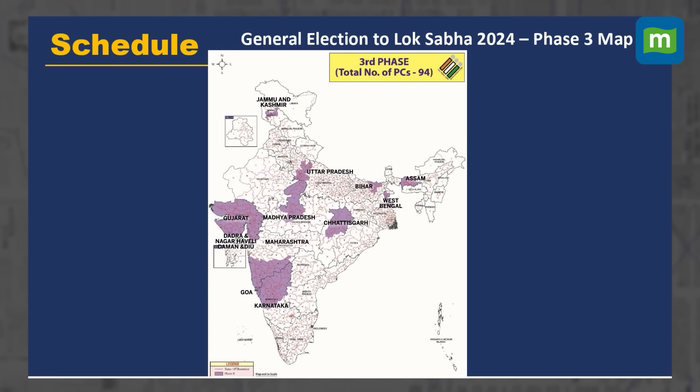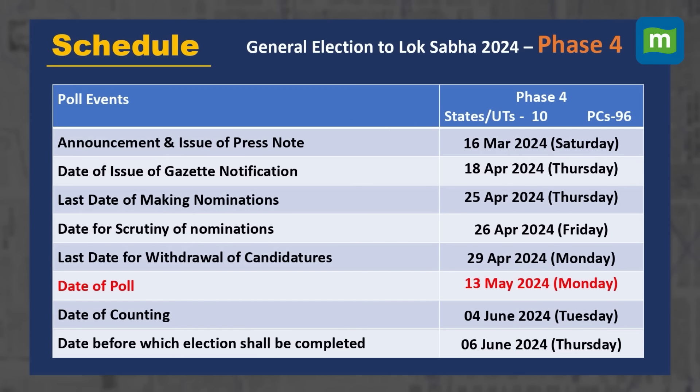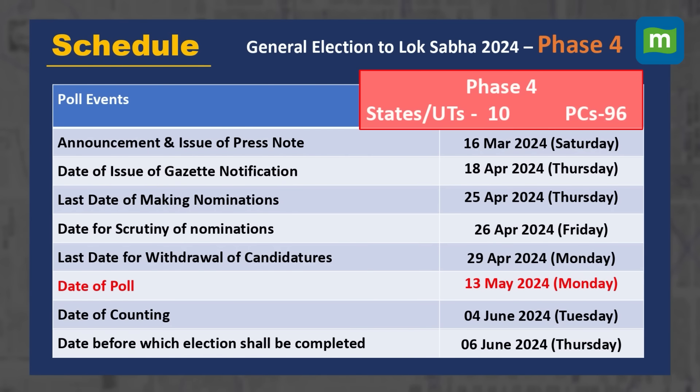Under phase 3, polling will be conducted in constituencies of Jammu and Kashmir, Uttar Pradesh, Madhya Pradesh, Maharashtra, Karnataka, Goa, Gujarat, Dadra and Nagar Haveli, Daman and Diu, Chhattisgarh, Bihar, West Bengal and Assam.